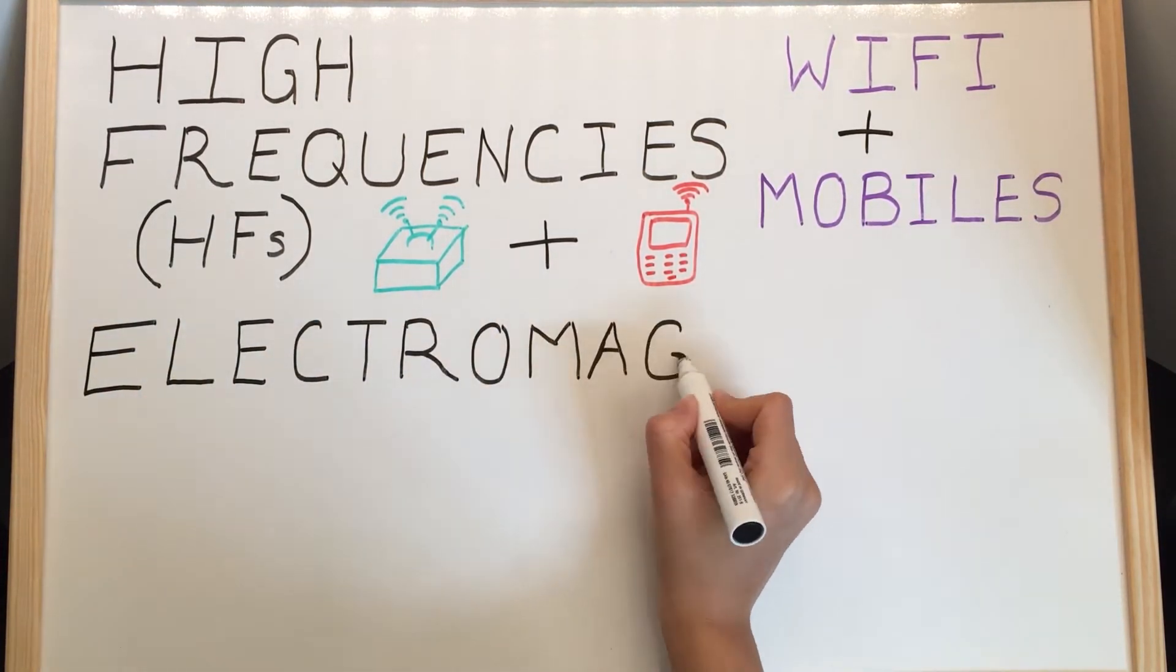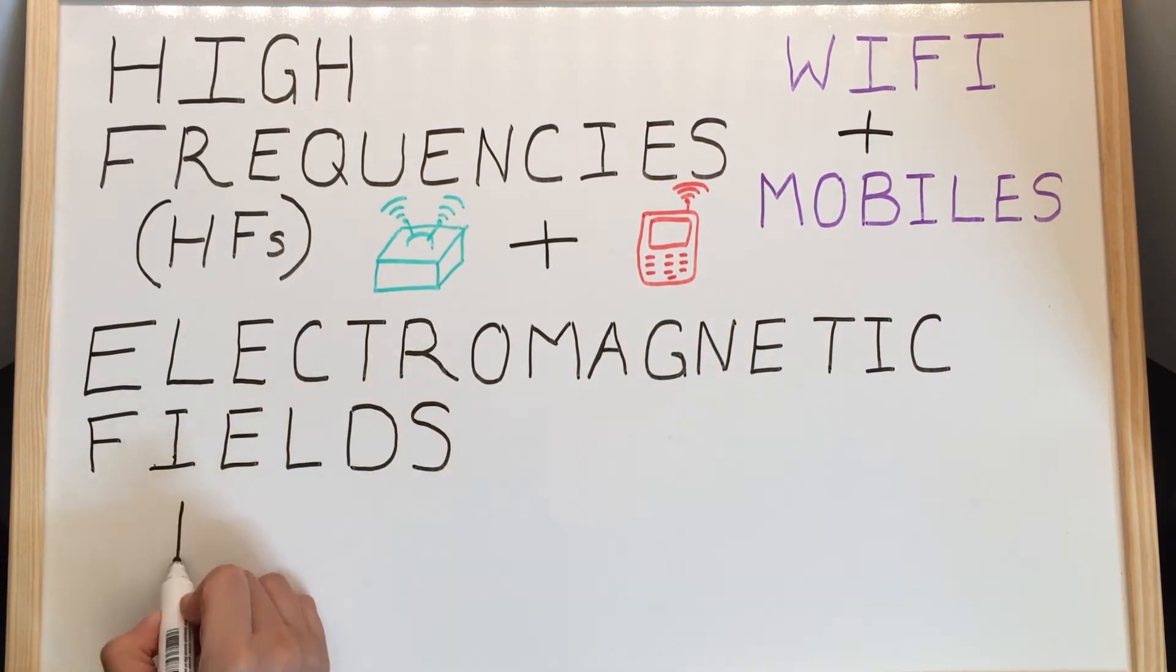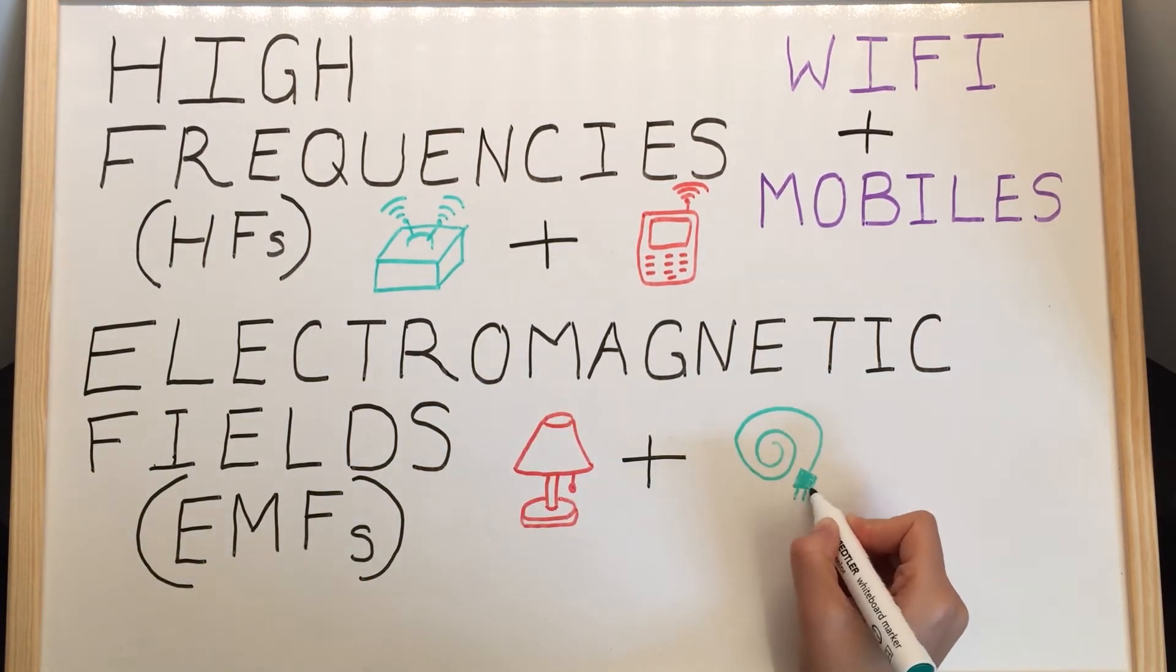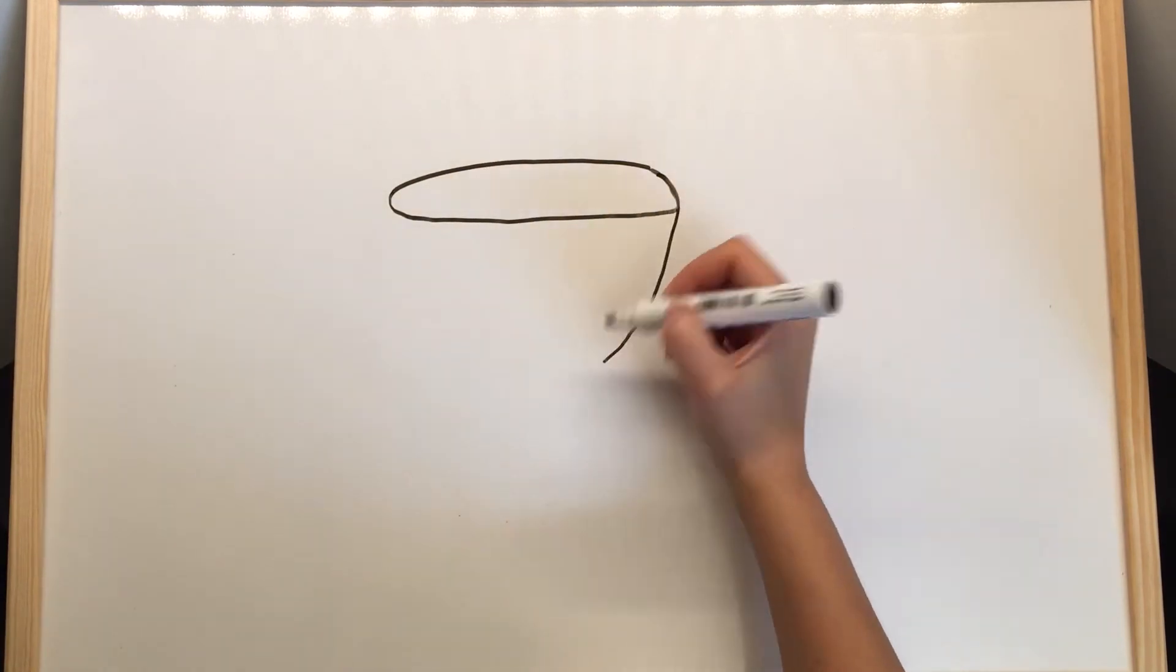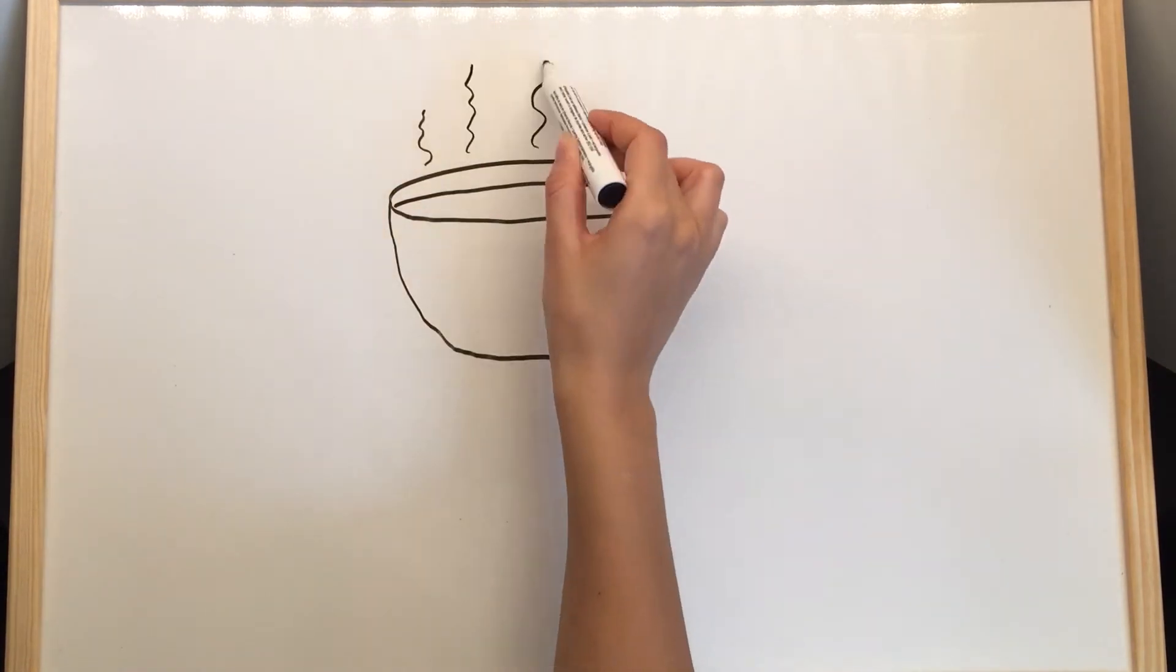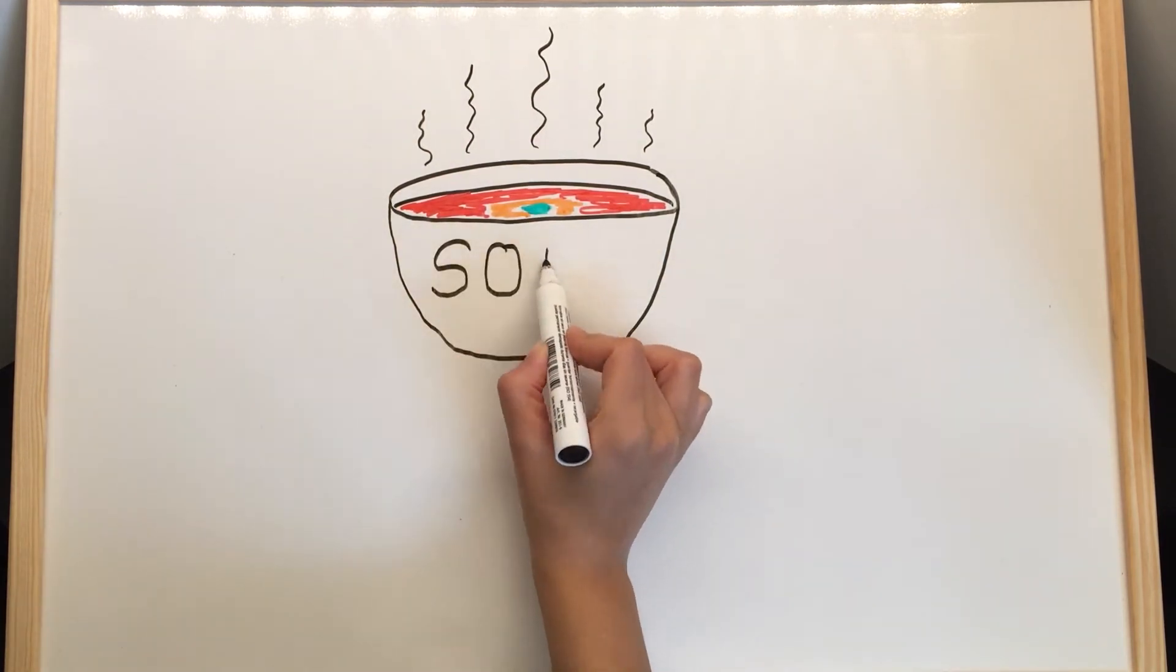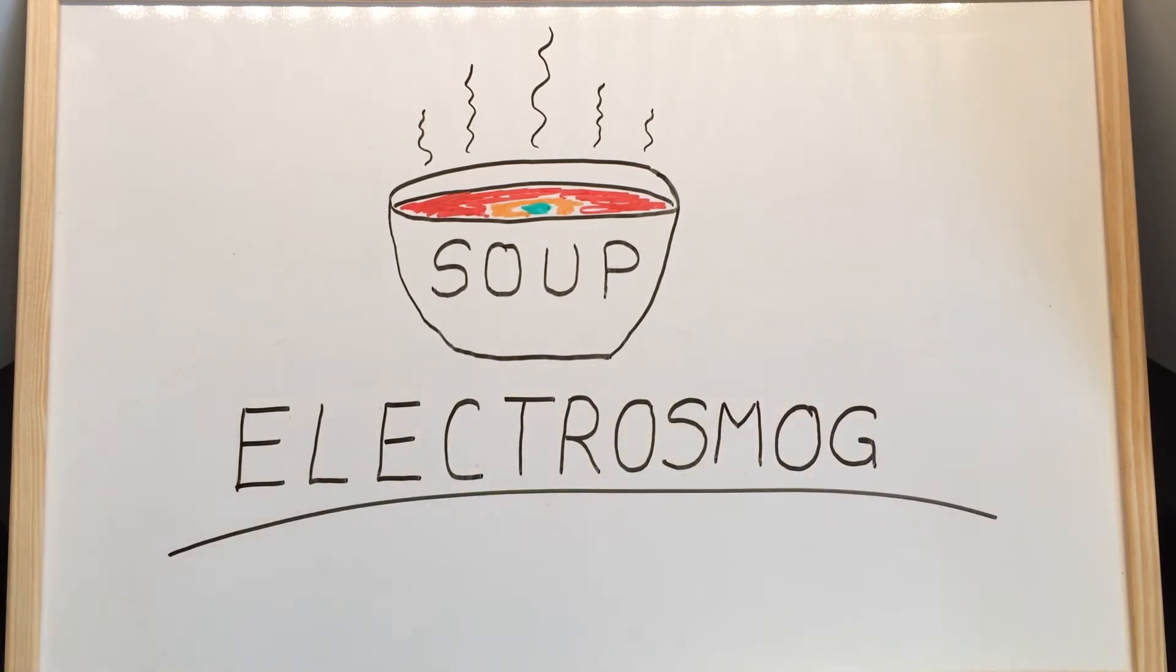And electromagnetic fields or EMFs from the likes of lamps and cables. The collective soup of all of this is called electrosmog.